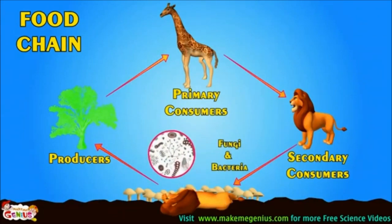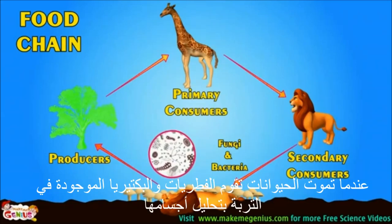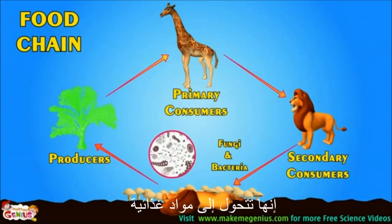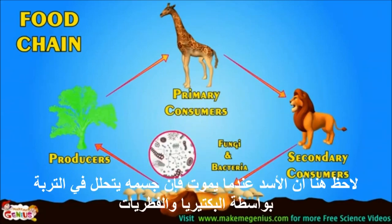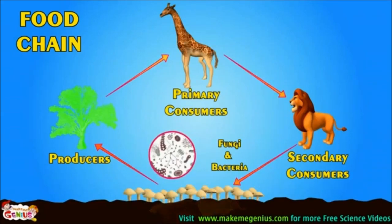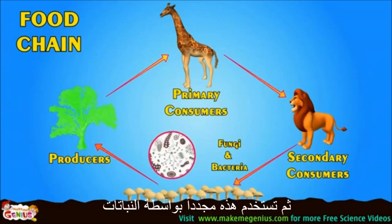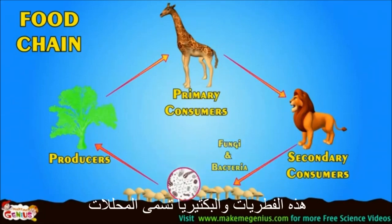There is one more part of the food chain — these are fungi and bacteria in soil. When animals die, these fungi and bacteria decompose their dead bodies. They become nutrients, which are again used by plants to make food. When a lion dies, its body is decomposed in soil by bacteria and fungi and turns into nutrients.